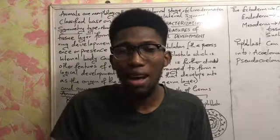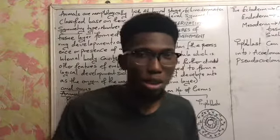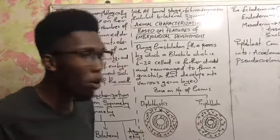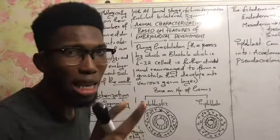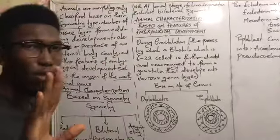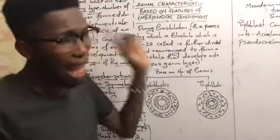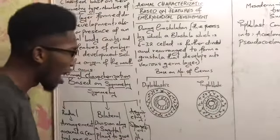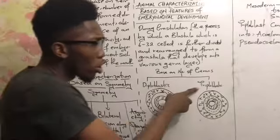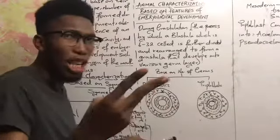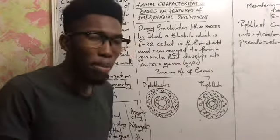Organisms can be divided into two groups based on the type of gastrulation and the formation of their germ layers: we have diploblastic organisms and triploblastic organisms. Diploblastic organisms have two germ layers — the endoderm and the ectoderm. Triploblastic animals have three germ layers: the endoderm, the mesoderm, and the ectoderm.